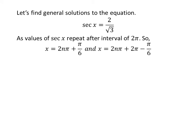Let us find the general solutions for the equation secant of x is equal to 2 upon square root of 3. As the values of secant of x repeat after the interval of 2 times pi, the general solutions are 2 times n times pi plus pi upon 6 and 2 times n times pi plus 2 times pi minus pi upon 6, where n is an integer.